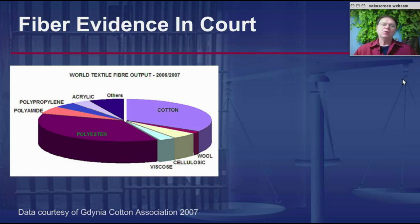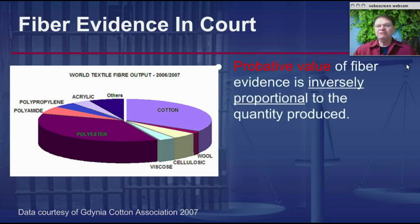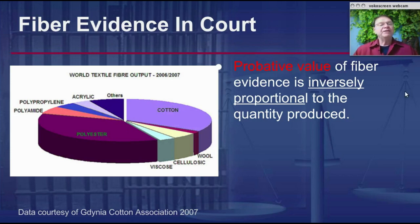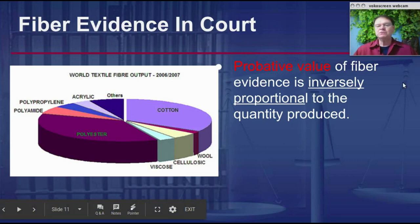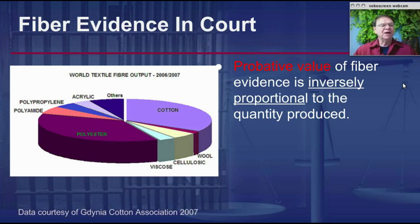All of these tests divide varieties of fiber into smaller and smaller categories to narrow down exactly where that type of fiber was produced. In the courtroom, the commonality of different fiber groups is an indication of their probative value. The probative value of fiber evidence is inversely proportional to the quantity produced. Very common fibers like polyester or cotton are of less probative value, while unusual blends of fabric have a higher probative value.